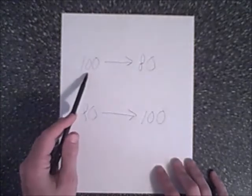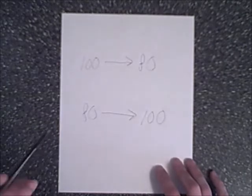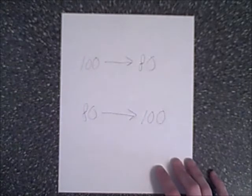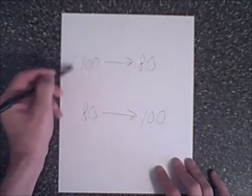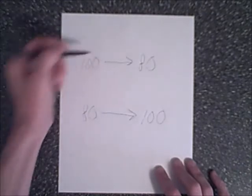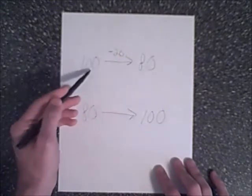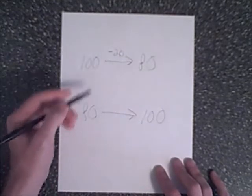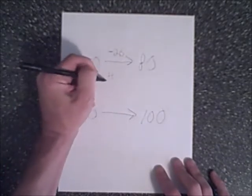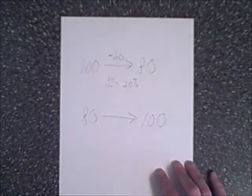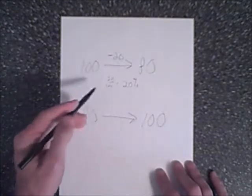Notice how I drew two arrows. This goes from 100 to 80 and 80 to 100. I want to illustrate what is the percentage change from 100 to 80. Here, 100 is my initial amount. What is our change? It's minus 20. What is 20 out of 100? 20 out of 100 is 20%. From 100 to 80, we have a 20% decrease.